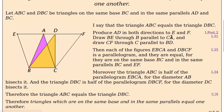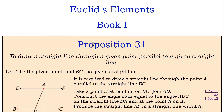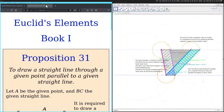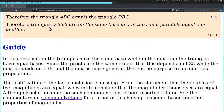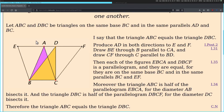That must be what 1.31 is. Nope, that's parallel copy. Let me do it this way. I say that the triangle ABC equals DBC. Produce AD in both directions to E. Draw BE through B parallel to CA, and draw CF through C parallel to BD.